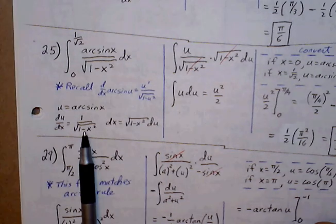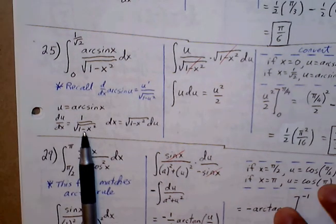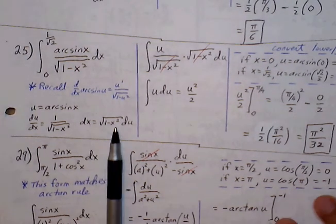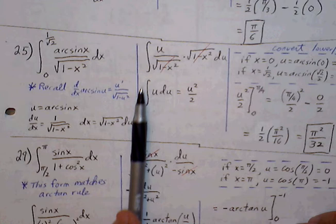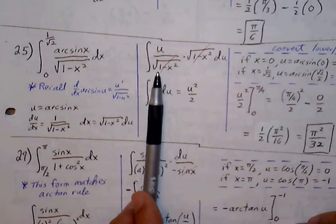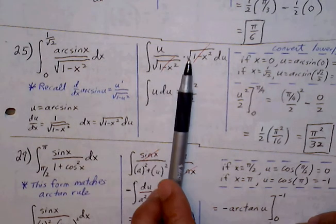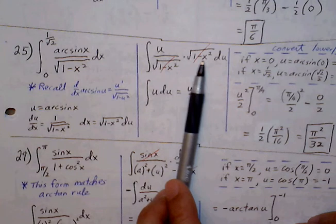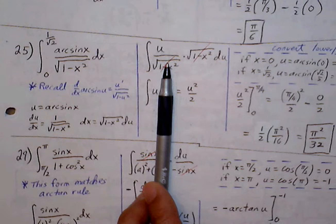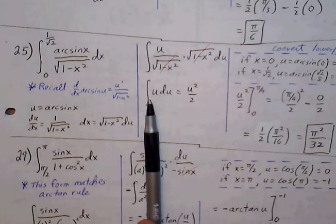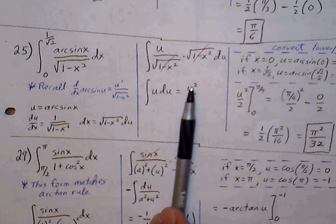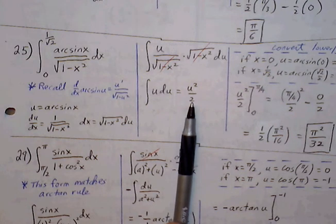Solve for dx: dx equals √(1 − x²) du. We make our substitutions — arctan gets replaced with u, the denominator stays, dx gets replaced with √(1 − x²) du. The √(1 − x²) cancels out nicely, so we simply have the integral of u du, which by the power rule is u²/2.